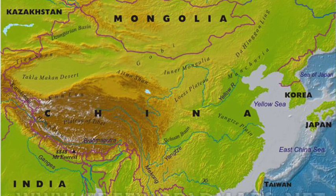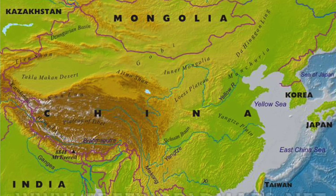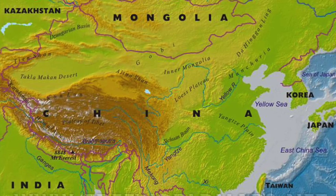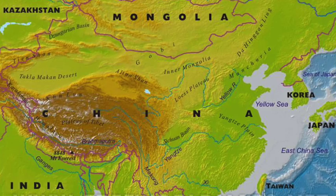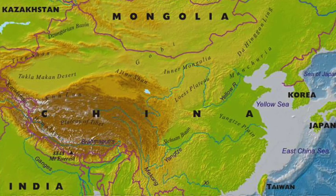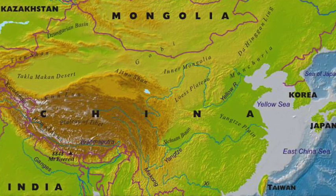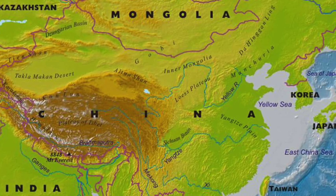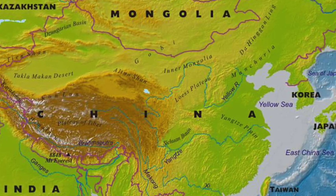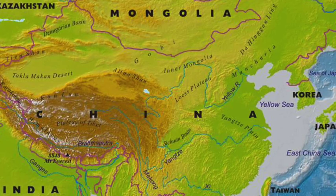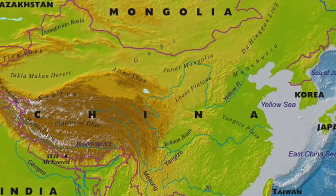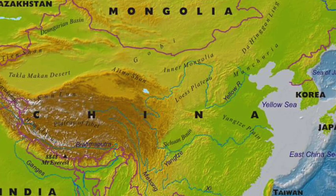Now take a look at the map of China. I want you to consider the geographic barriers represented in China and think about those represented in Greece. What are the differences and what is the same? What advantages did China's geographic barriers offer them versus what advantages did Greece's geographic barriers offer them? How are the geographic situations similar and different?